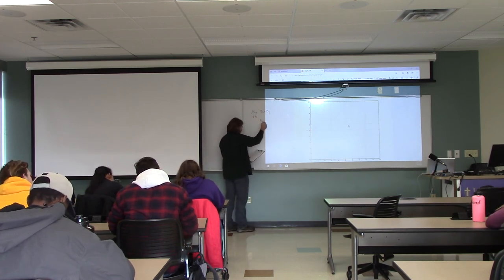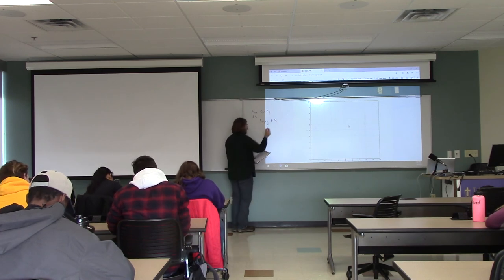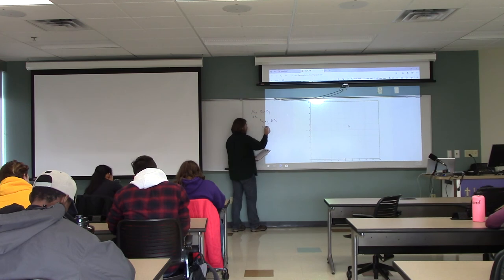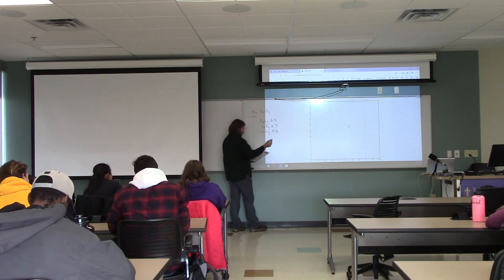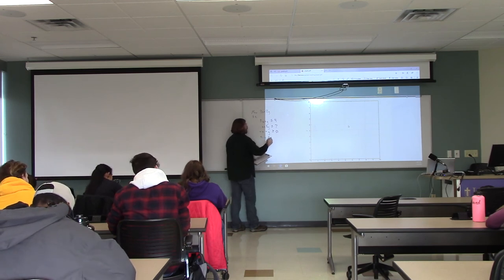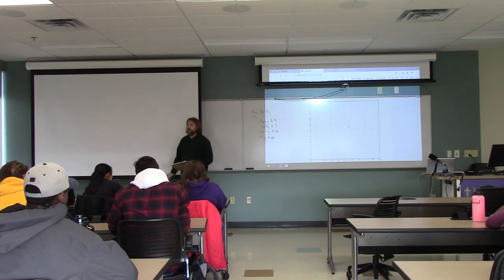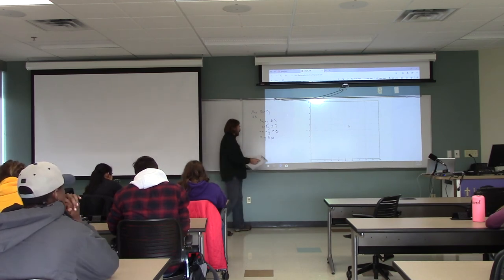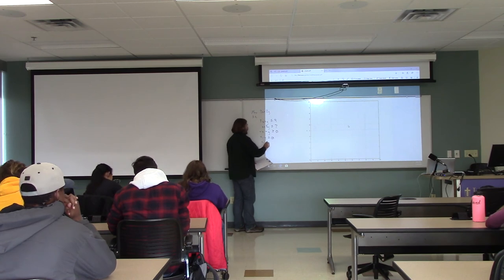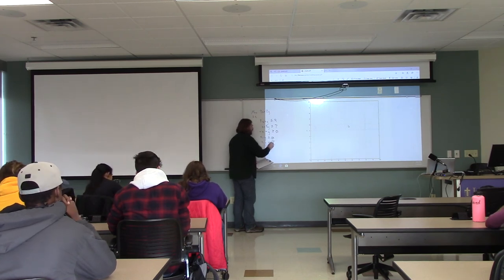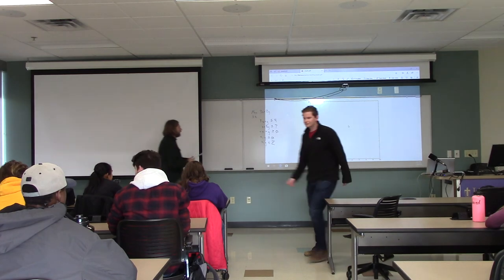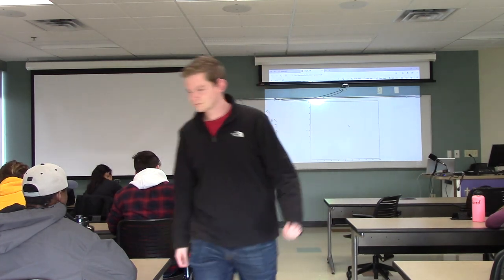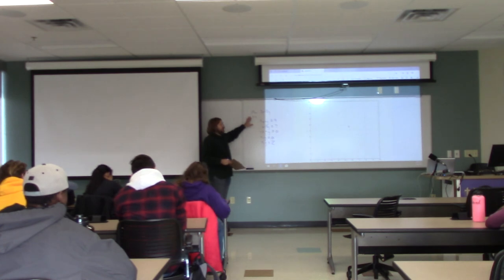The problem is: maximize 3x plus 2y, subject to 3x plus y ≤ 9, x plus 3y ≤ 7, and negative x plus y ≥ 0, with the logical constraints that x and y are non-negative. The new thing we're adding is that x and y are elements of the natural numbers — in other words, they have to be integers. This is the only new constraint we haven't seen before.